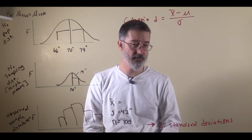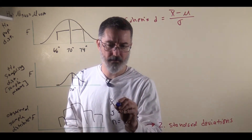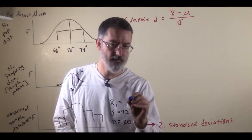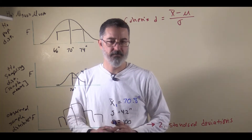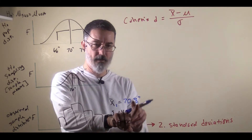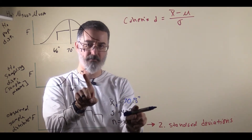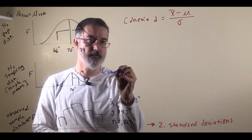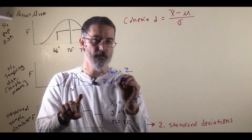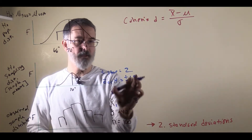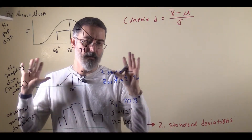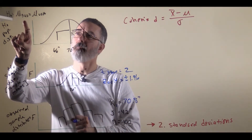Let us go through some examples of calculating Cohen's d effect size. For our first sample, the mean height of 100 SUU students is 70.8 inches. You only calculate effect size if you reject the null hypothesis. In this case, our sample on this distribution would be two standard deviations over, giving a z-statistic equal to 2. The z-critical values are always plus or minus 1.96, so our observed sample mean is beyond the z-critical. We would reject the null hypothesis and decide SUU students are not the same height as American men.